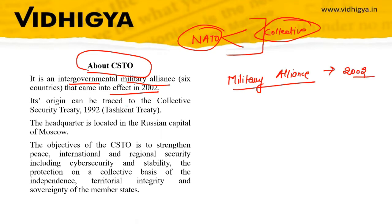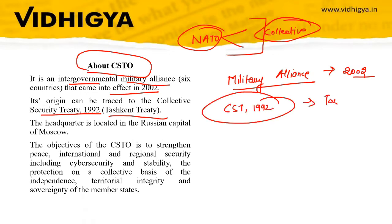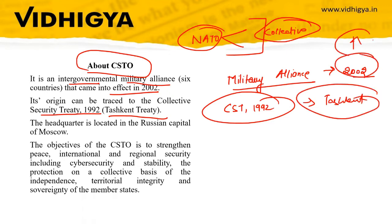Its origin can be traced to the Collective Security Treaty of 1992, also known as the Tashkent Treaty. So while its origins go back to 1992, it officially came into effect in 2002. Both this date and the Tashkent Treaty are important facts to remember.